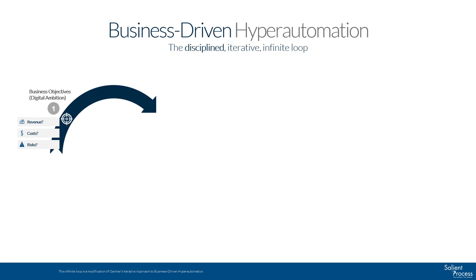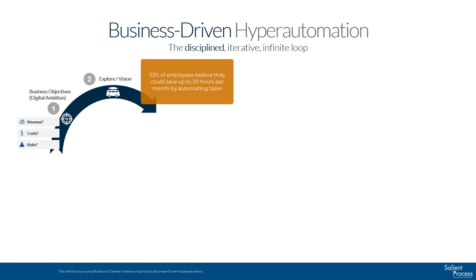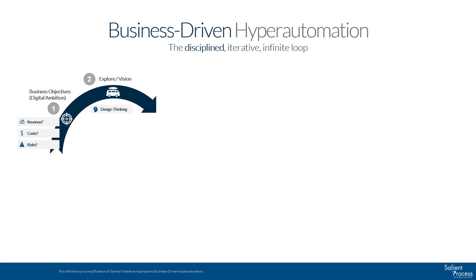Now that you have your business objectives, you can start to explore what you need to do with your programs and processes. Much of the improvements and changes will be automation, given the fact so many jobs have substantial pieces of them that can be automated. According to WorkMarket, 53% of employees believe they could save up to 20 hours per month by automating tasks. However, you should take a more comprehensive view than just automation. To widen your perspective, you may decide to employ approaches like design thinking or game theory to take your company through what-if scenarios. Your vision may end up being to completely tear down what you have and automate everywhere you can, or to iteratively improve on what you have by automating portions of it.